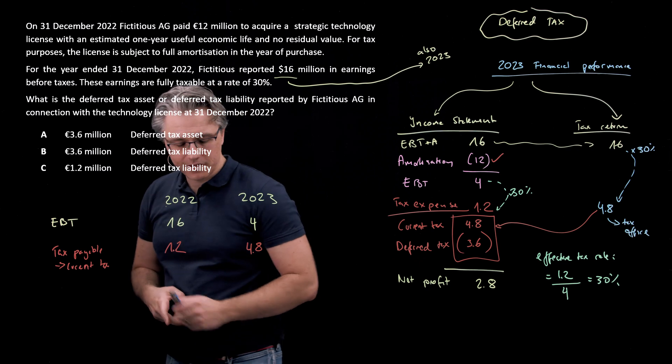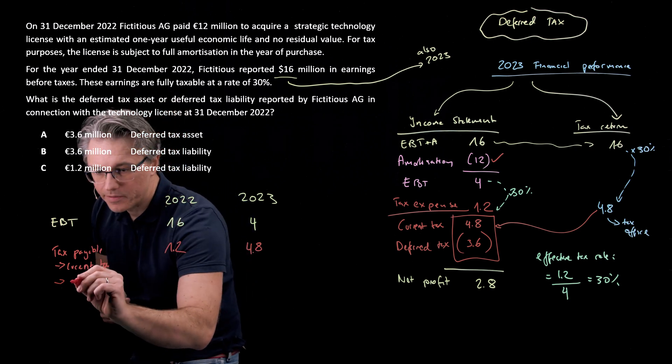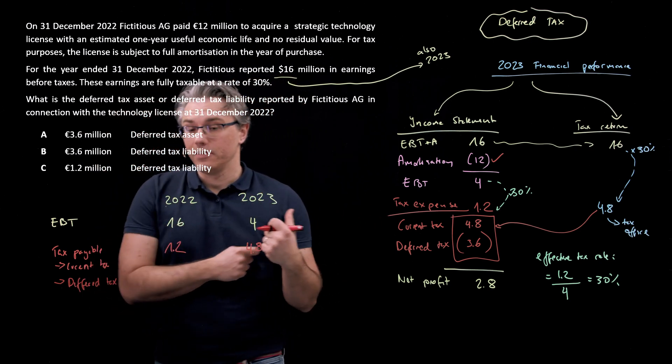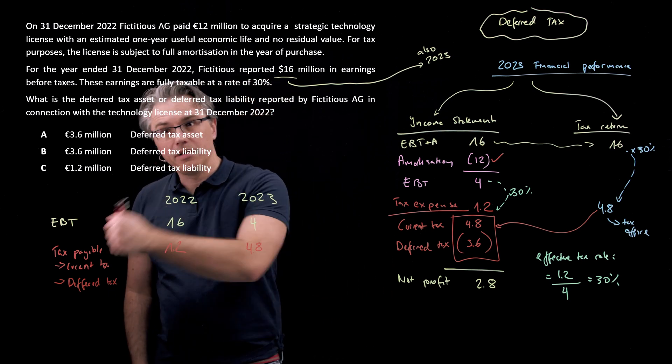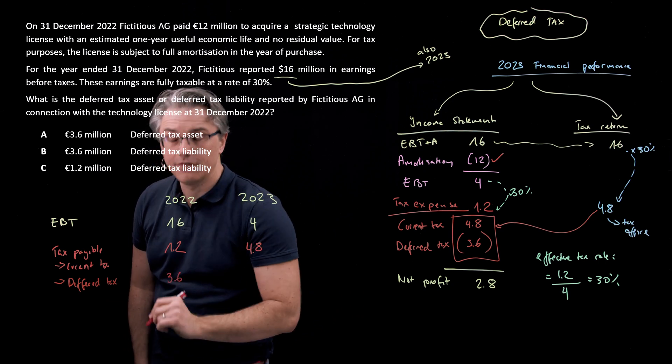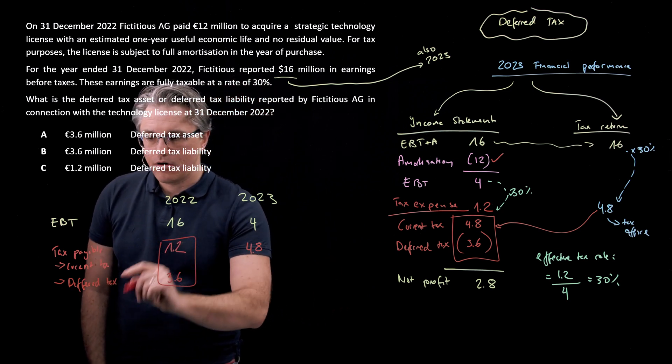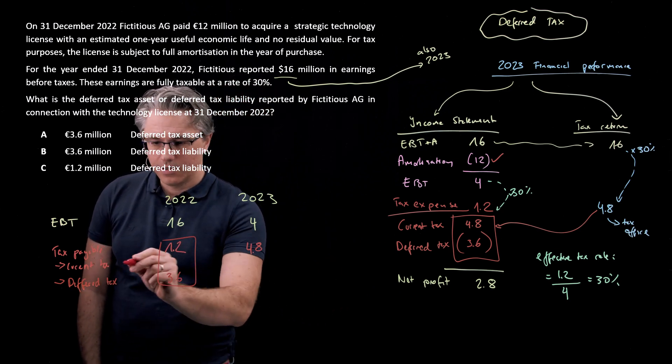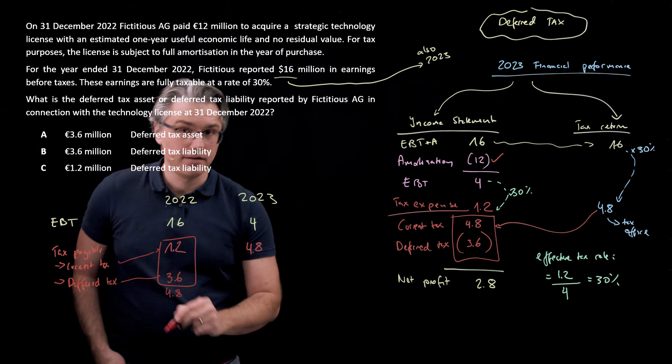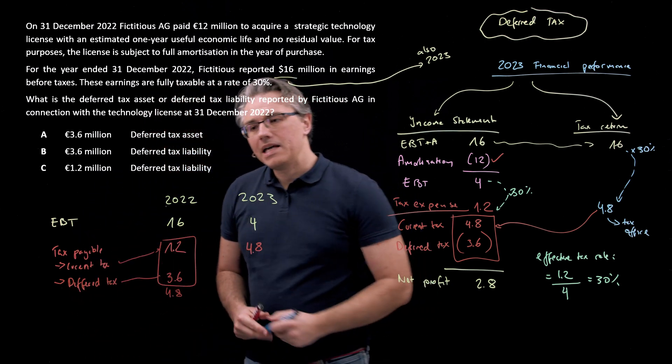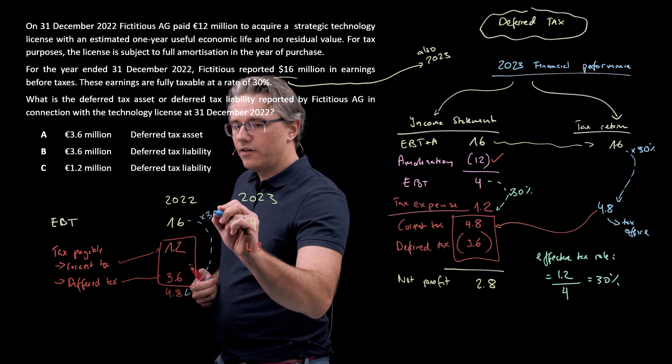It's misaligned. So, the role of deferred tax is to make certain adjustments, which are only going to be temporary. In the previous video, we said the 2022 income statement should additionally be loaded or hit with a deferred tax expense of 3.6. And this brings the whole tax payable composed of current and deferred tax to an overall expense of 4.8, which is going to make it aligned with our EBT, accounting EBT, because that's 30% of it.